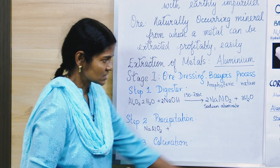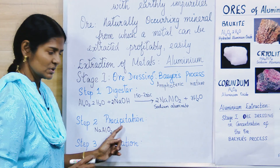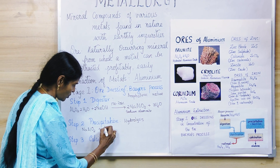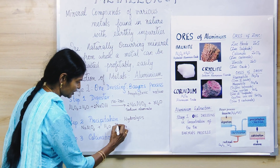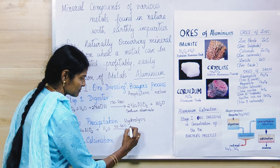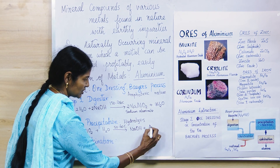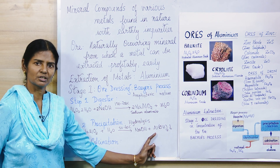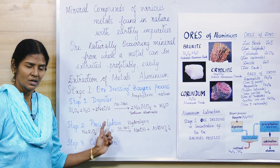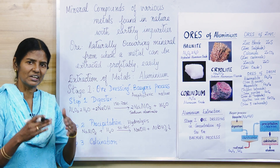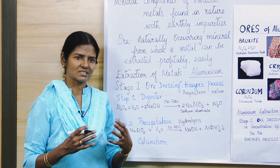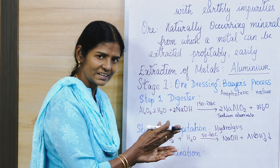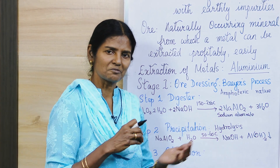The second step is precipitation, also called hydrolysis. We use water at a temperature of 50 to 60 degrees Celsius. You get back sodium hydroxide, and aluminium hydroxide precipitates out — that is why this step is called precipitation. For any reaction to happen you need a trigger — like someone laughing in class sets off the whole class. Here, the trigger is introducing one or two crystals of aluminium hydroxide into the mixture.